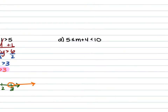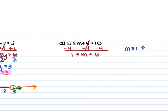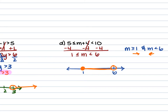For part D: 5 ≤ m + 4 < 10. Subtract 4 from all parts to isolate m. 5 - 4 = 1 and 10 - 4 = 6, giving 1 ≤ m < 6. This is the same as saying m ≥ 1 and m < 6. The signs point toward each other, so on the number line you have a closed circle on 1, an open circle on 6, and the line connects the two points.